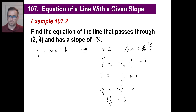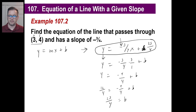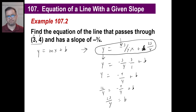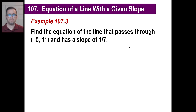25 divided by 4 is a little more than 6. So your line is going to be pointing down because of the negative slope, but it starts a little above 6. Piece of cake.